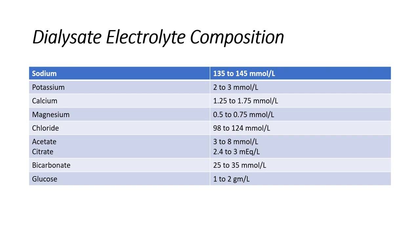Last but not least, glucose usually ranges from 1 to 2 grams per liter in the dialysate.